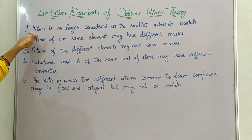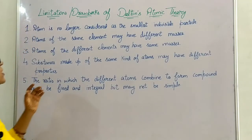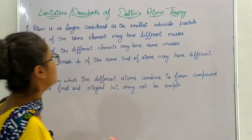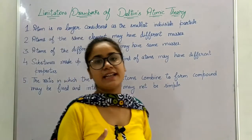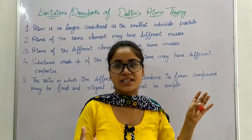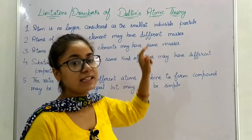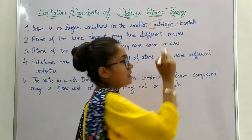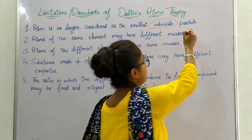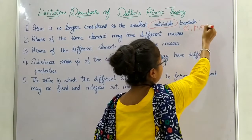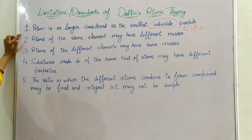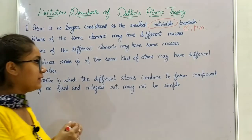We will start with the first limitation. The first one states that atom is no longer considered the smallest indivisible particle. In the original atomic theory, Dalton said atom is indivisible — it cannot be divided. But later scientific research concluded that atom can be divided, so it is not an indivisible particle. There are particles even smaller than atoms: electrons, protons, and neutrons.